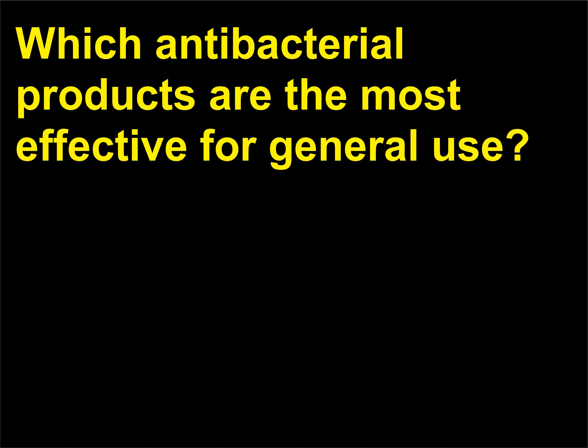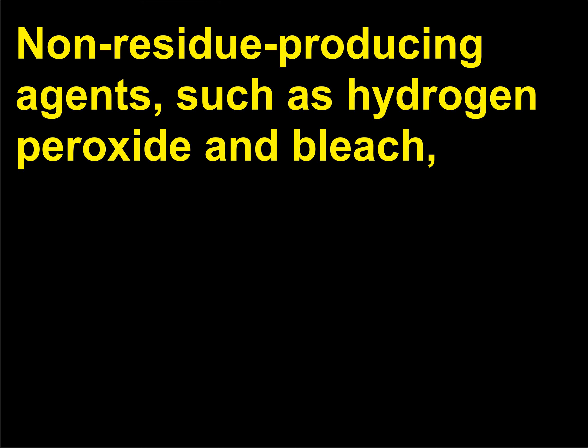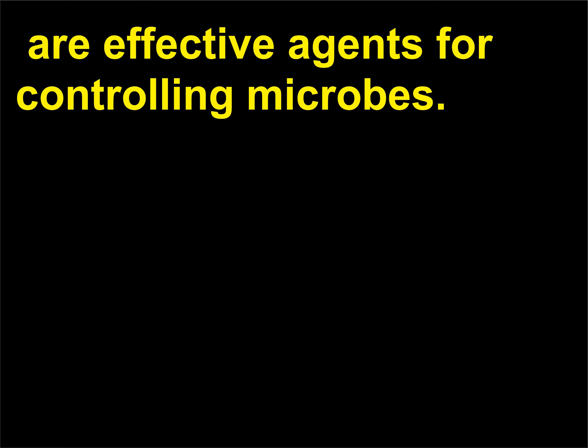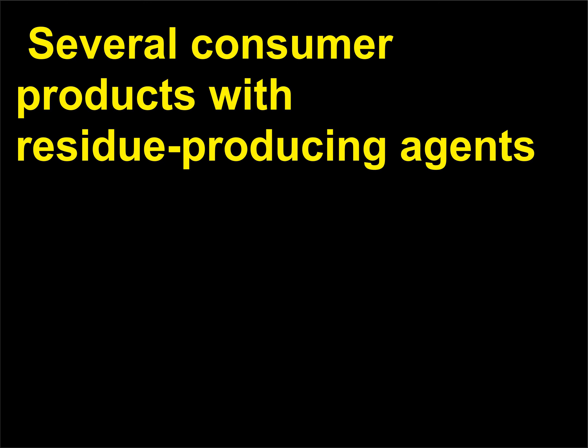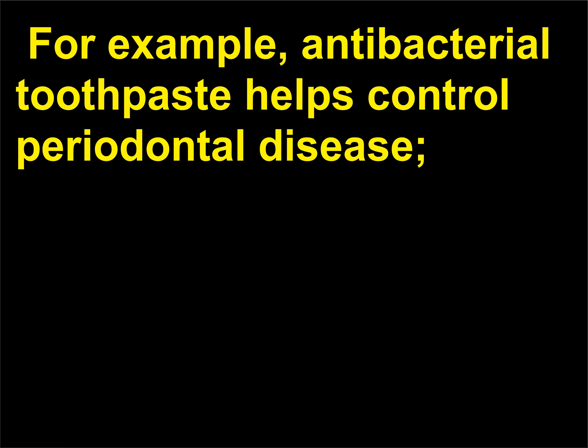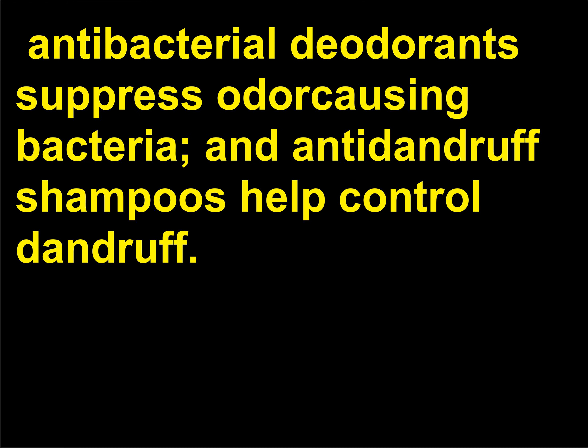Which antibacterial products are the most effective for general use? Non-residue producing agents, such as hydrogen peroxide and bleach, are effective agents for controlling microbes. Several consumer products with residue-producing agents have proved effective for specific conditions. For example, antibacterial toothpaste helps control periodontal disease, antibacterial deodorants suppress odor-causing bacteria, and anti-dandruff shampoos help control dandruff.